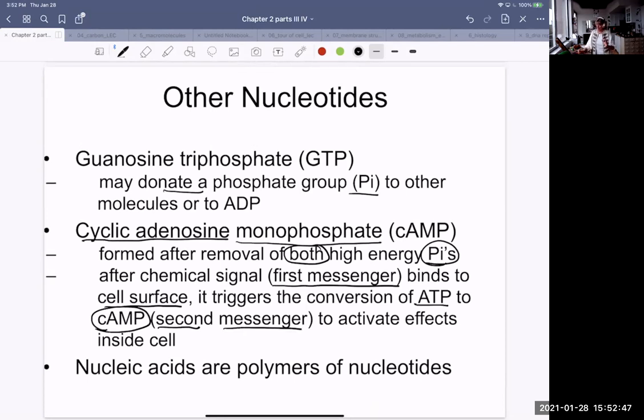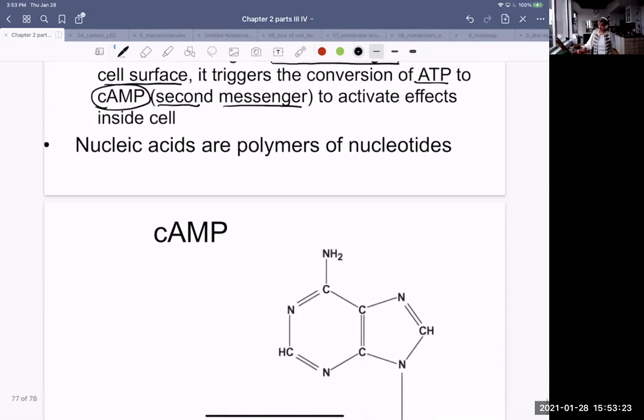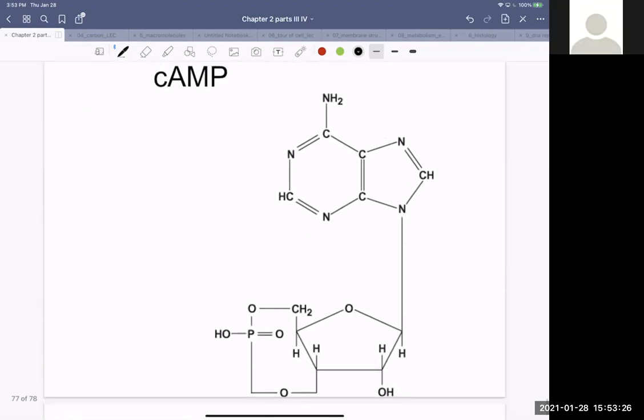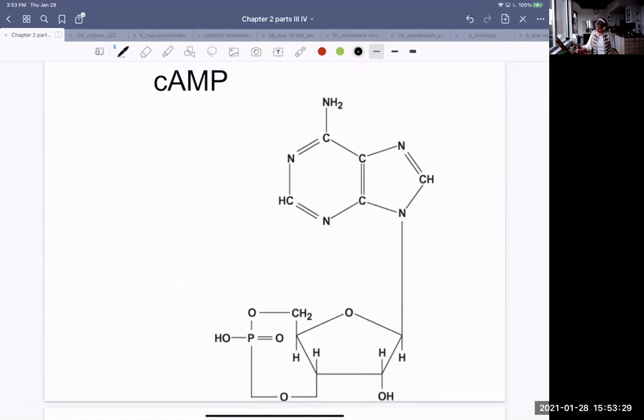That occurs after the first messenger system binds to the cell surface. It triggers the conversion of ATP to cyclic AMP, and that's called the second messenger. Nucleic acids are polymers of nucleotides. The nucleotide is the monomer of the nucleic acid, just like for proteins, the monomer is a different kind of acid. What are the monomers of proteins? Amino acids. What are the monomers of carbohydrates? Monosaccharides, exactly.